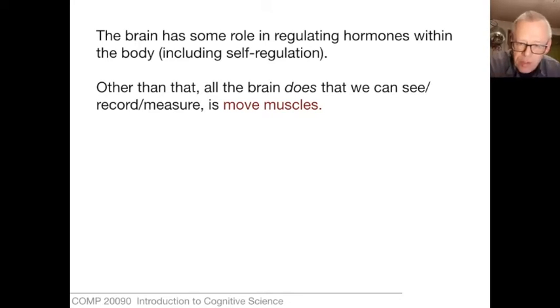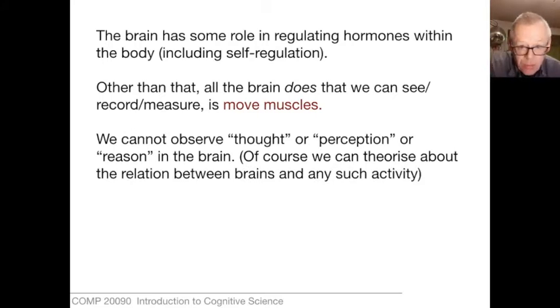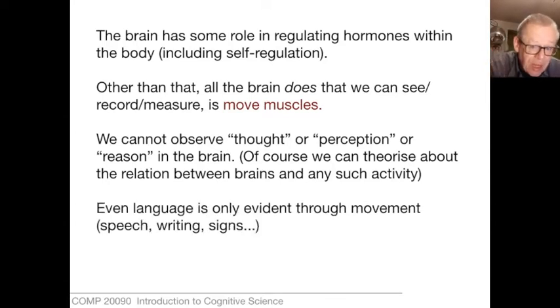To a brain scientist, movement science would seem to be of the utmost importance. This is not the way you usually think about brains, but remember we cannot observe thought. Thought has never been observed. Perception has never been observed. It's not an empirical object of study. Language itself can only be observed through either sound or writing or gestures—in other words, through the movement of the body. It's through the movement of the body that we find out anything at all about the owner of that body.